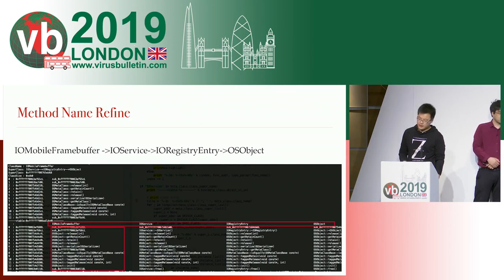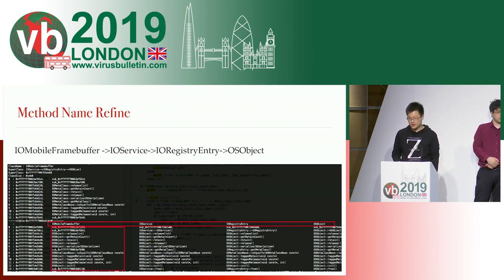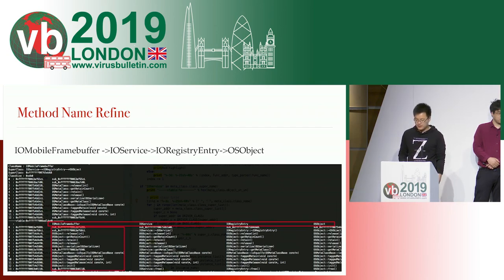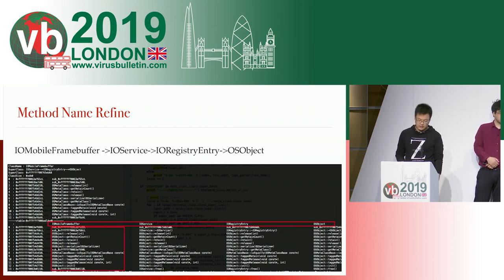As we know the string symbols exist in the release version firmware, we should refine the method names for each OSObject class, including the instance method table and meta method table. Using the inheritance mechanism, many method names can be refined from their parents. Here is an example: we can see that IOMemoryFromBuffer is inherited from IOSource.